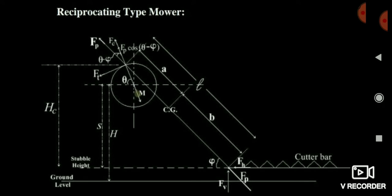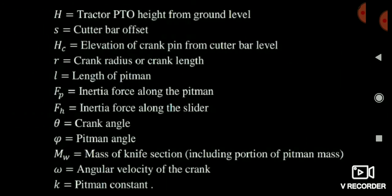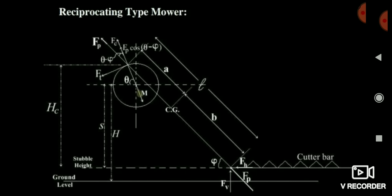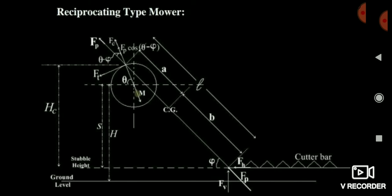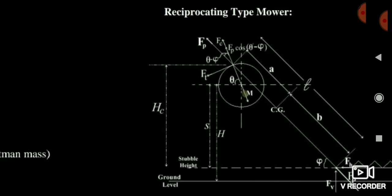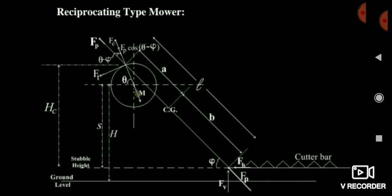The next terms are stubble height S and height Hc. The tractor PTO height from the ground is capital H. S is the cutter bar offset — in many questions they will say that cutter bar offset is given. So you should note that cutter bar offset is S and the tractor height from the ground is capital H.